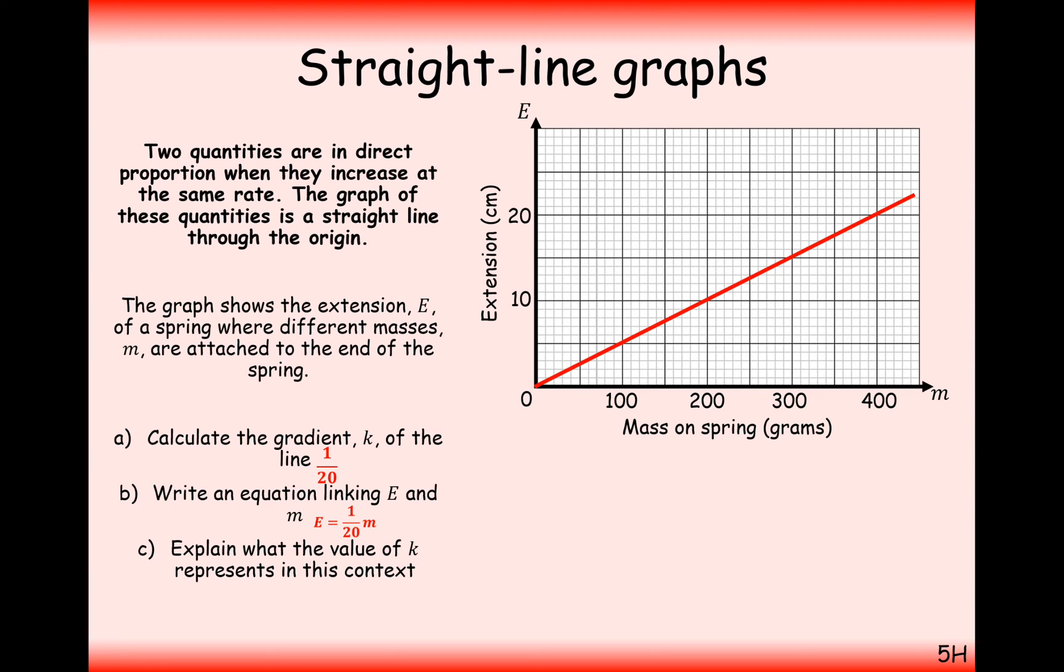Now we have to write a context for the value of k, the gradient of the line. So, what this means in technical maths talk is that the gradient is for how much 1 we increase on the x-axis, and it's how much the y-axis increases by. So, now we need to link it into the question here.